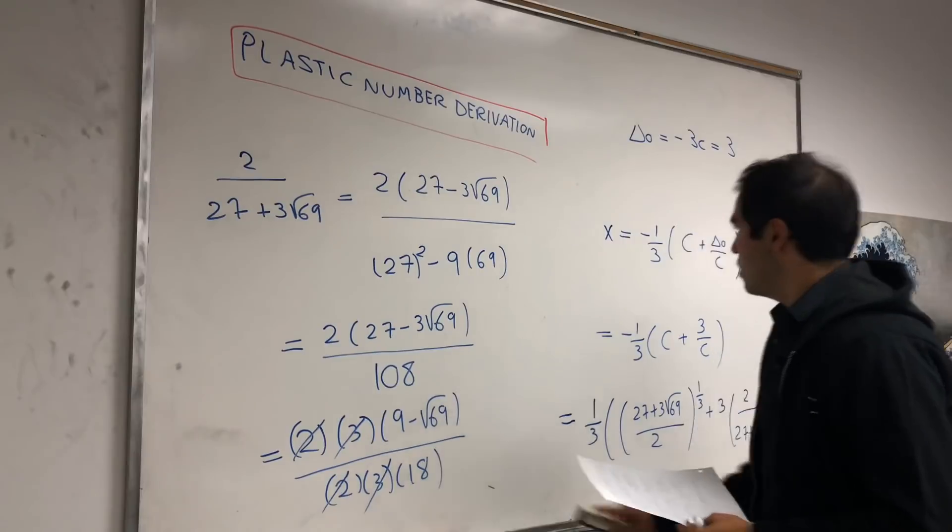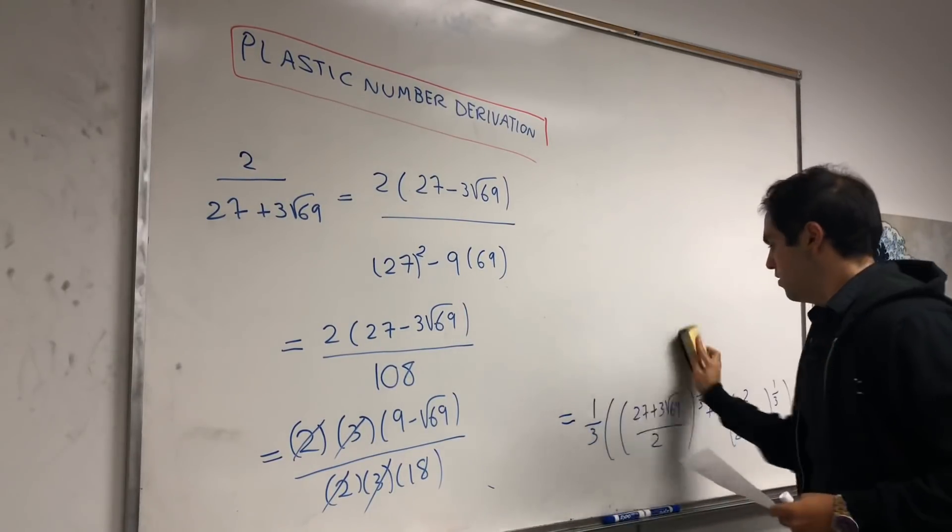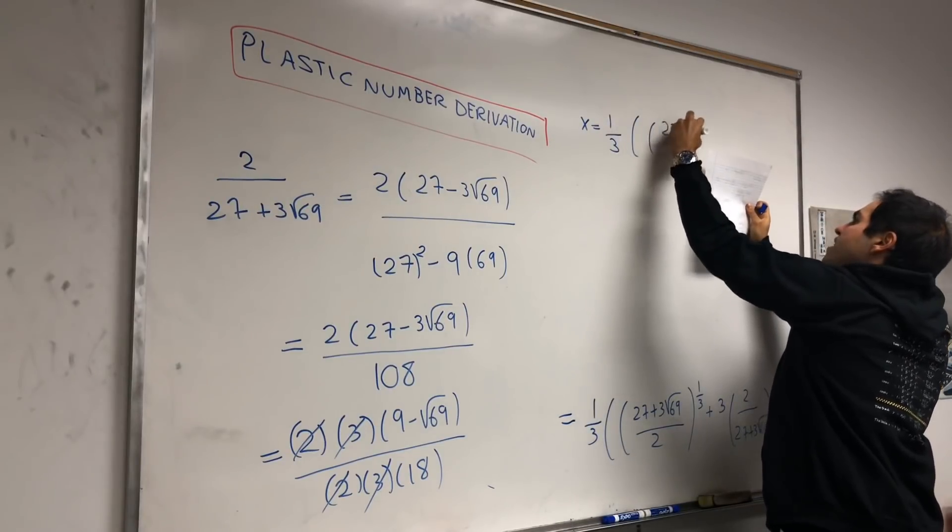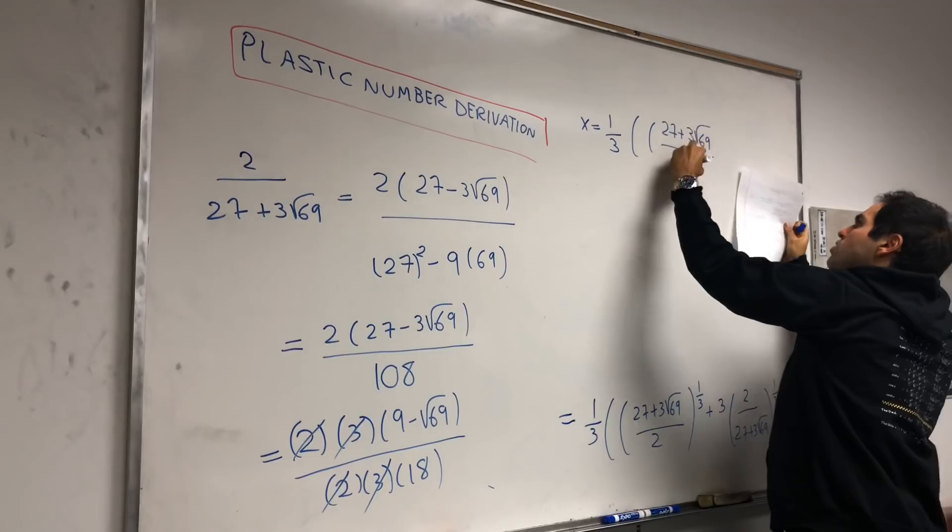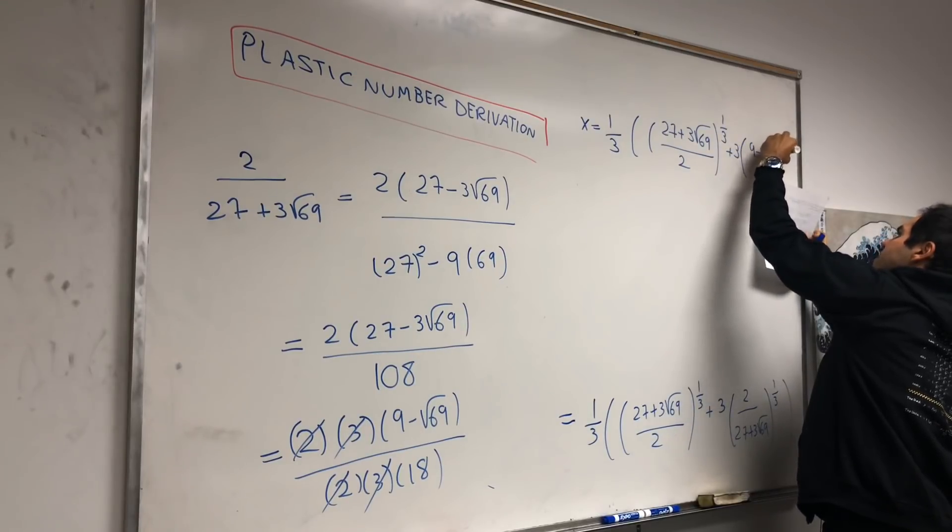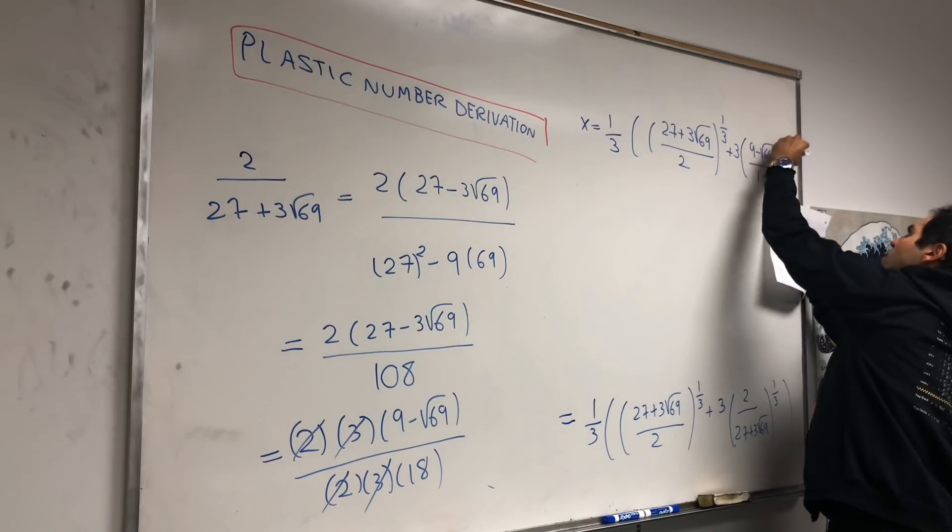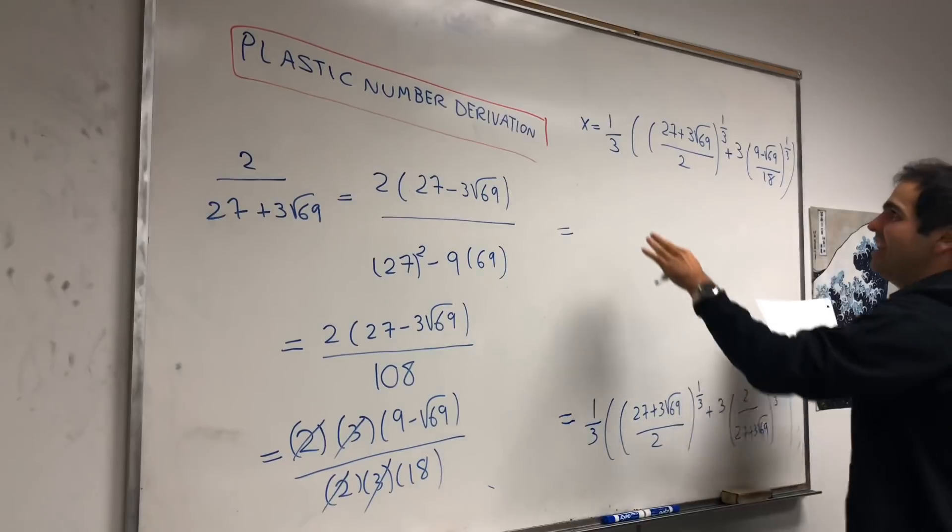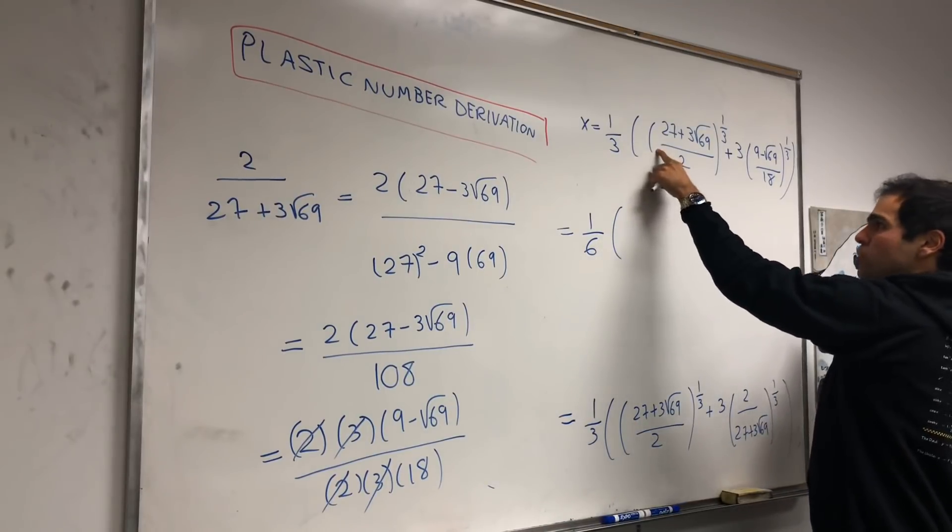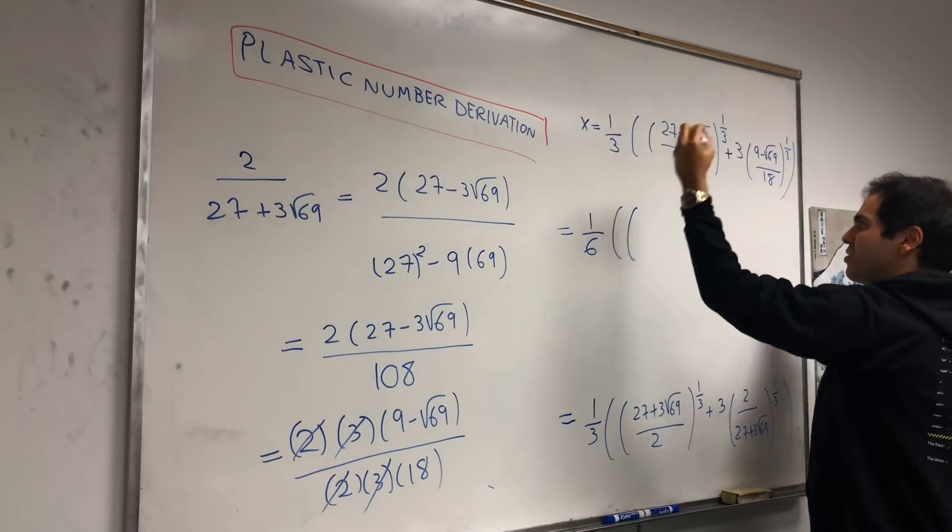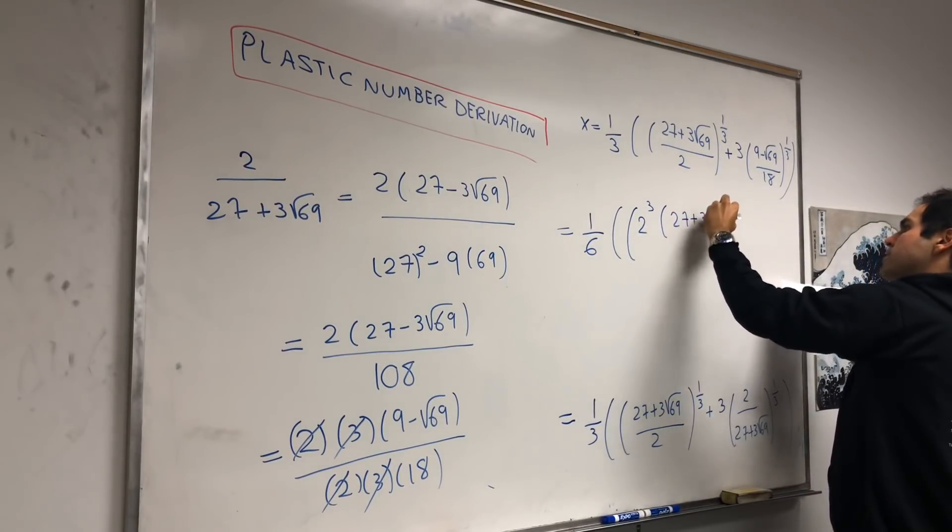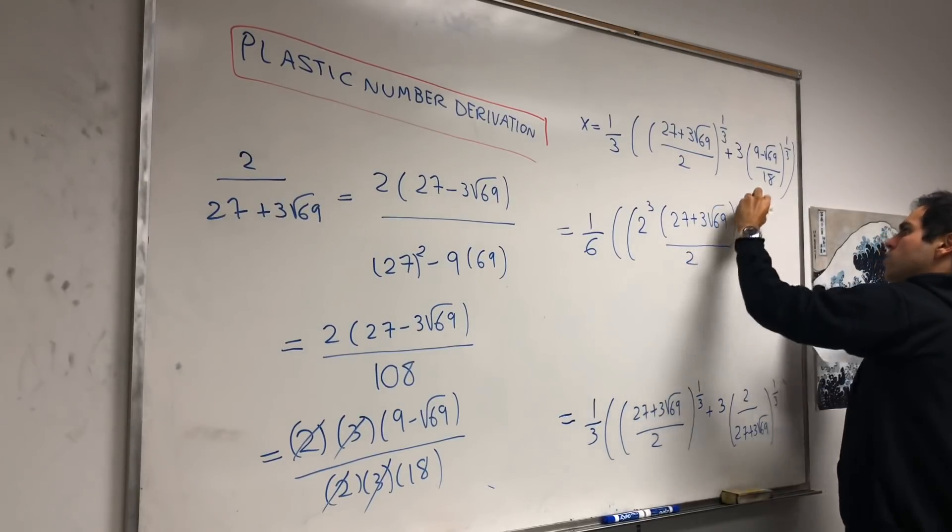And so, you just get 9 minus square root of 69 over 18. And then, what this then becomes, remember this was our x, so x becomes 1 over 3 times 27 plus 3 square root of 69 over 2, to the 1 third, plus 3 times square root of 69, minus square root of 69, over 18, to the 1 third. Now, for reasons that will become apparent in a second, let's write this as 1 sixth, and try to simplify this. So, it becomes 1 sixth, times 2 times that, but the 2, you put it under the cube root, so this becomes 2 cubed, 2 cubed times 27, plus 3 square root of 69, over 2, 1 third,